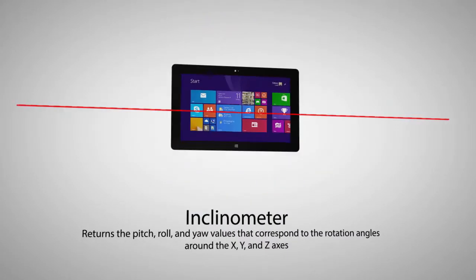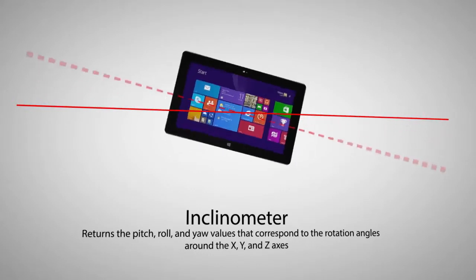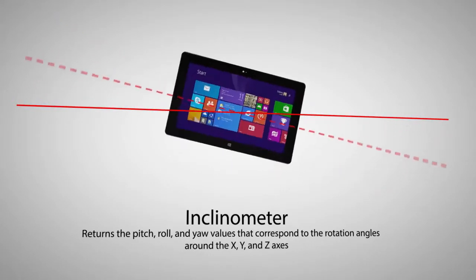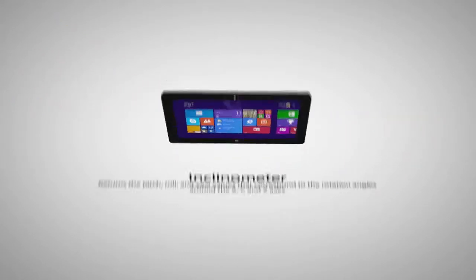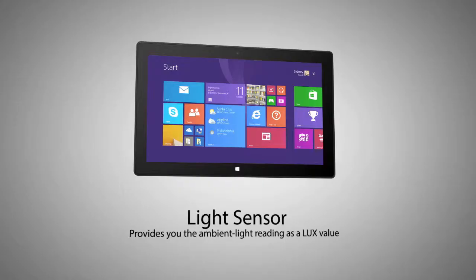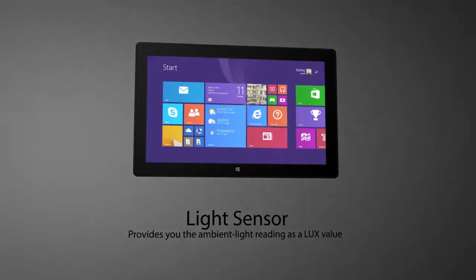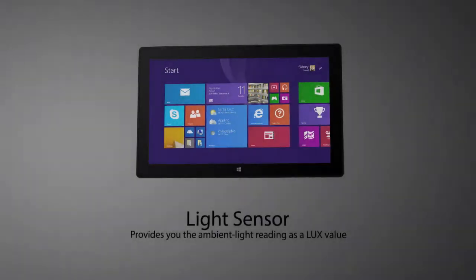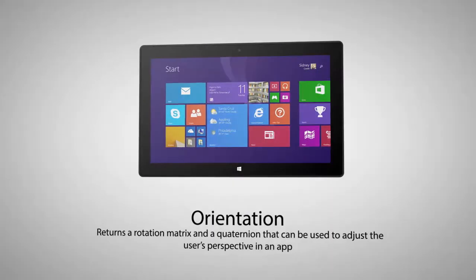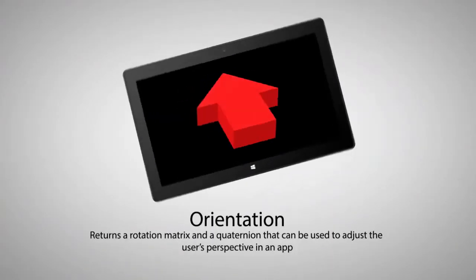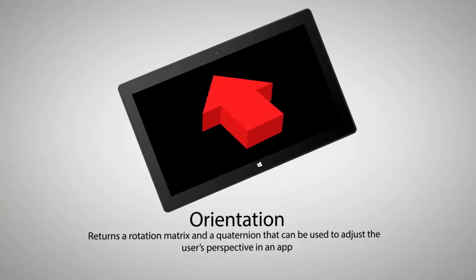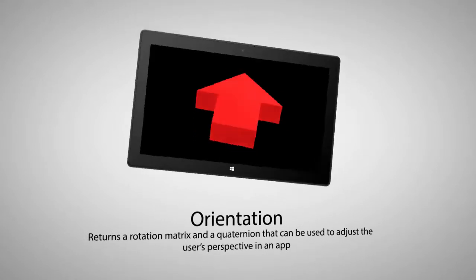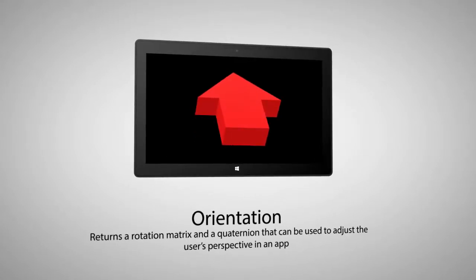The inclinometer returns the pitch, roll, and yaw values that correspond to rotation angles around the x, y, and z axes. The light sensor provides you with the ambient light reading as a lux value. The orientation sensor is an advanced sensor that returns a rotation matrix and a quaternion that can be used to adjust the user's perspective in an app.